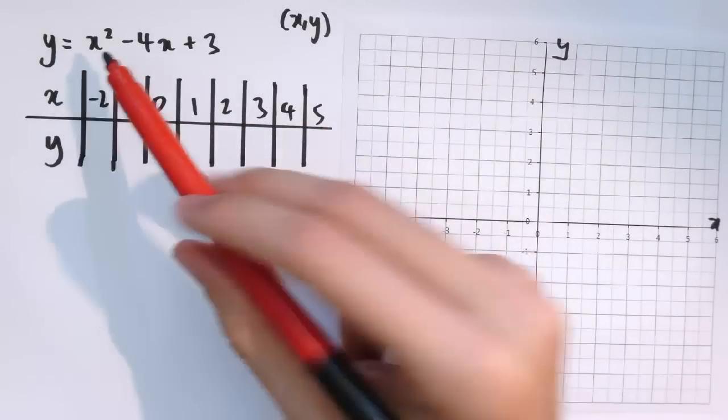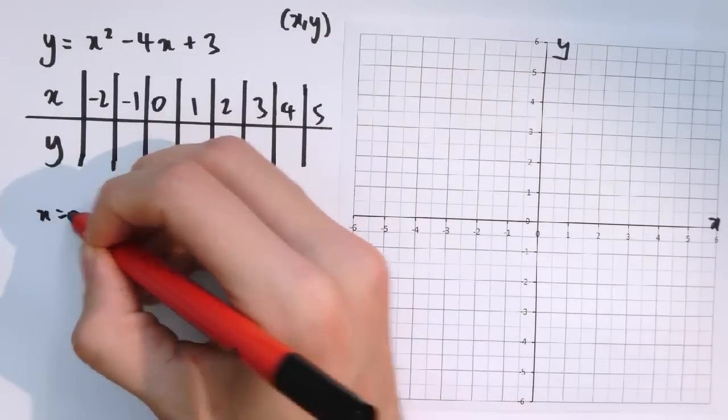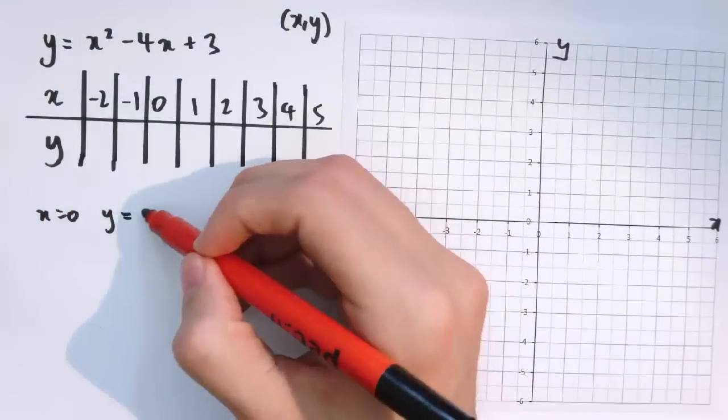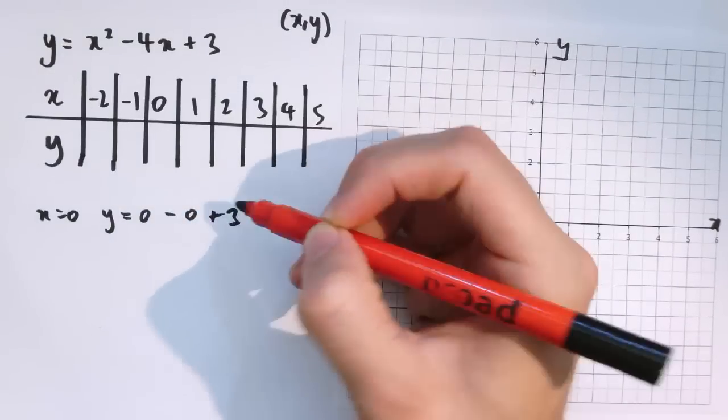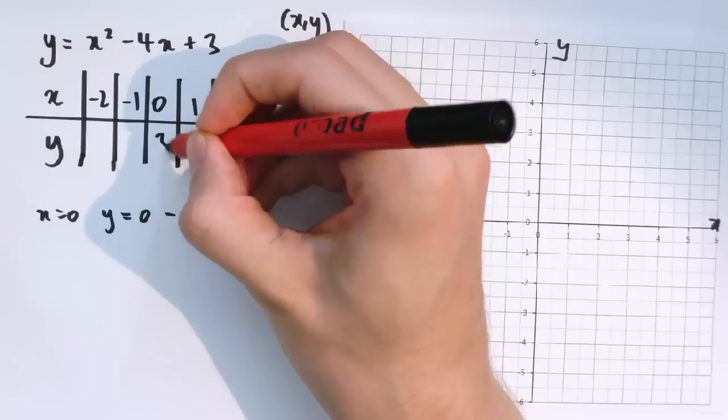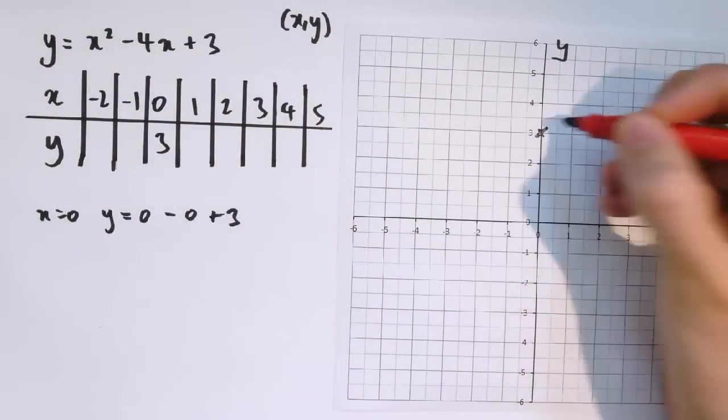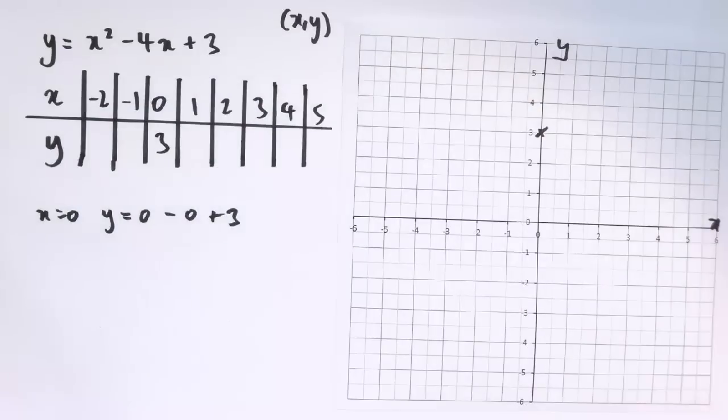For example, at x equals 0, we've got y equals 0 squared, which is 0, minus 4 times 0, plus 3, so y equals 3. So there's a point there, 0, 3, and the table helps us organize all this information.